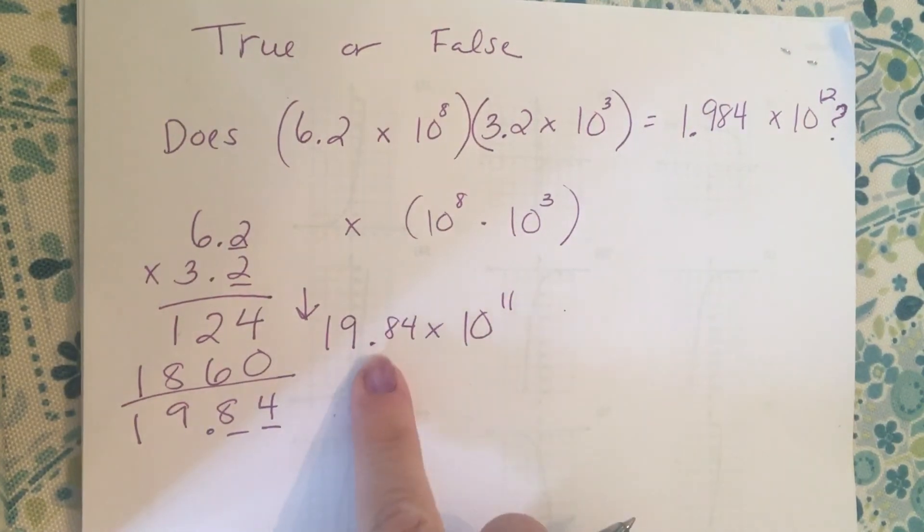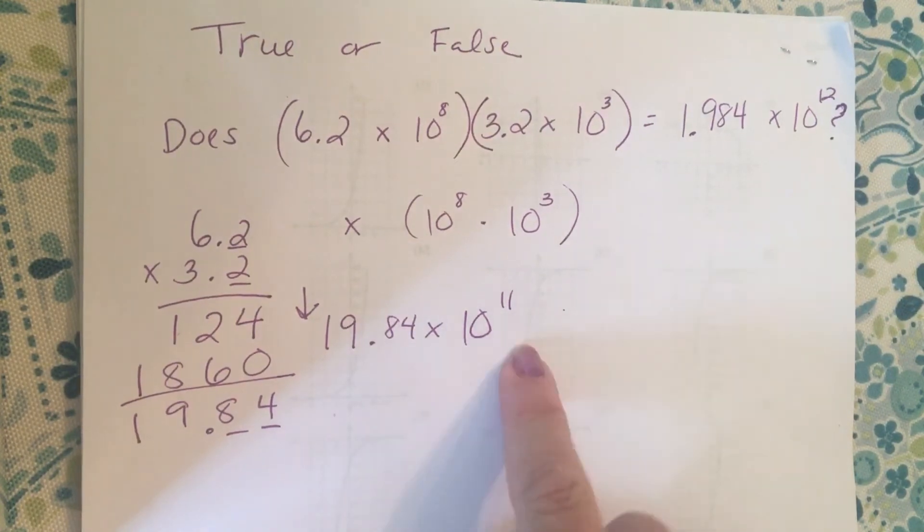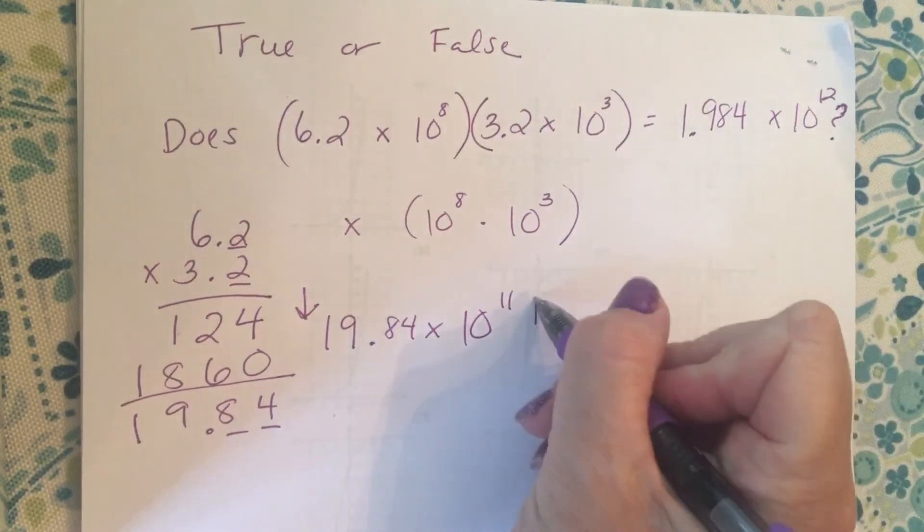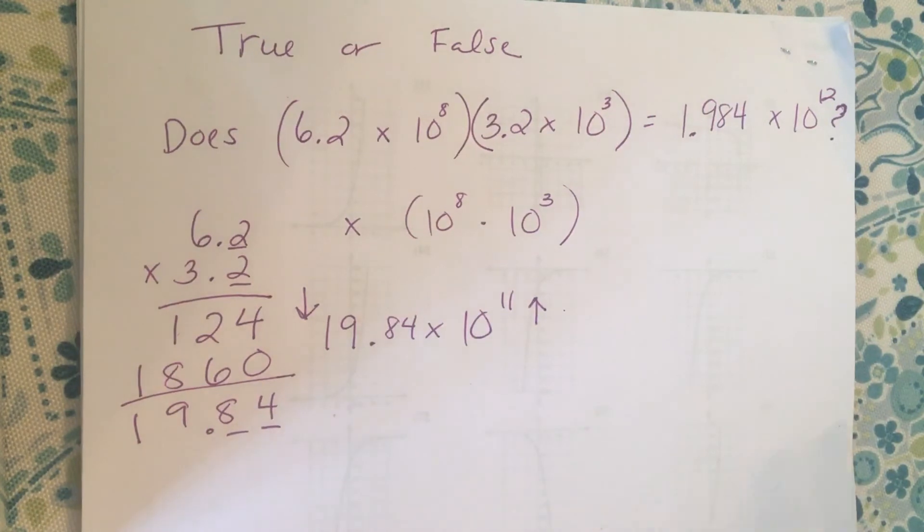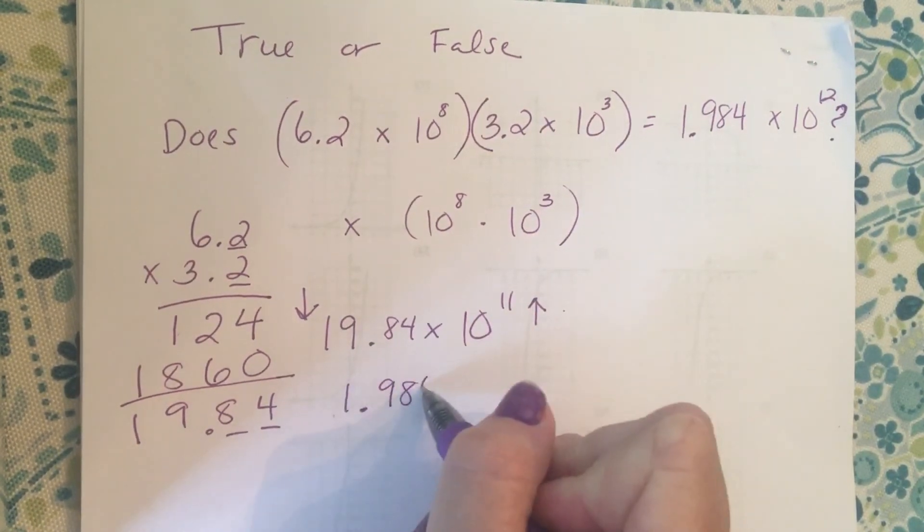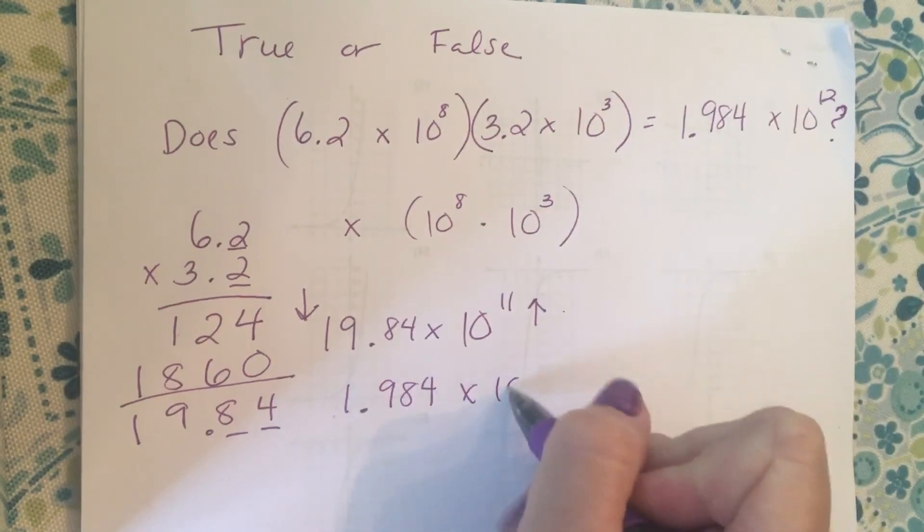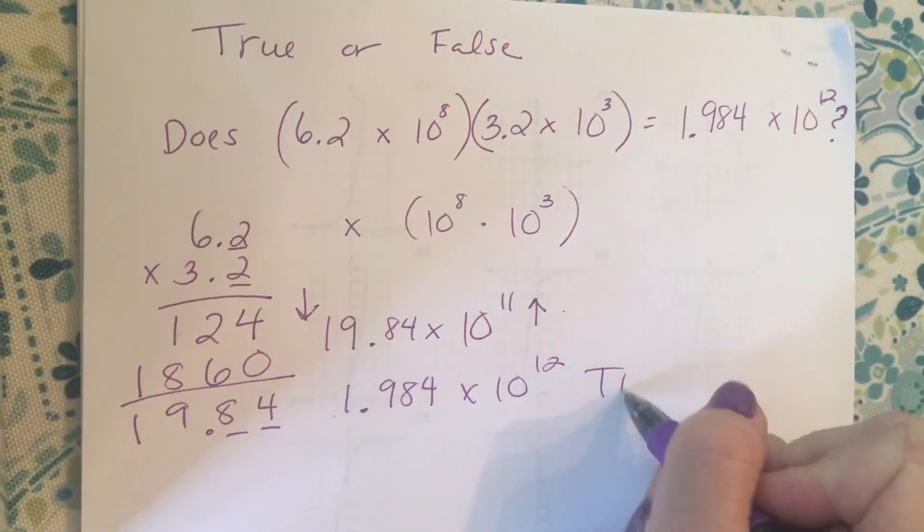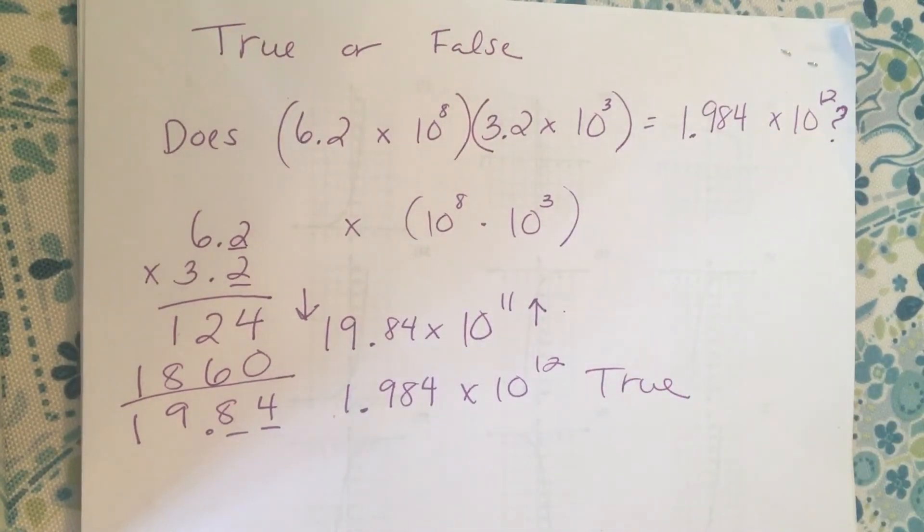If I'm going to divide this value by another ten, then that means here I'm increasing by a power of ten to make sure the value of the number stays the same. So it becomes 1.984 × 10¹², which means the statement is true.